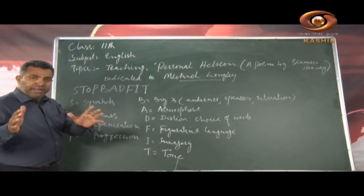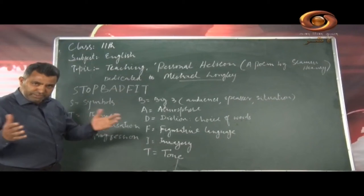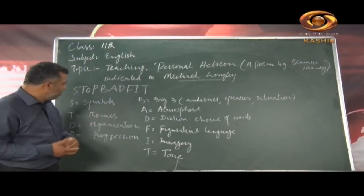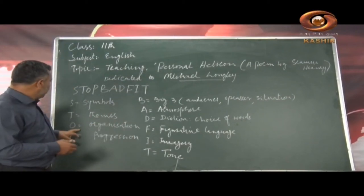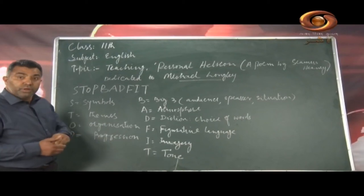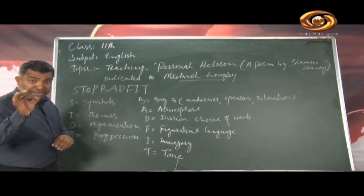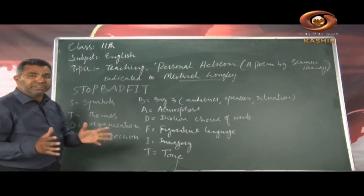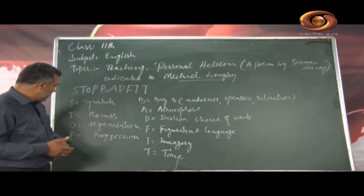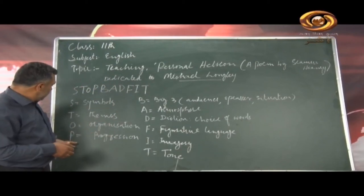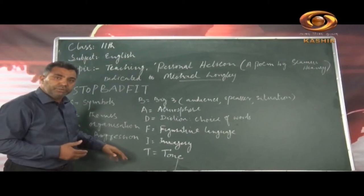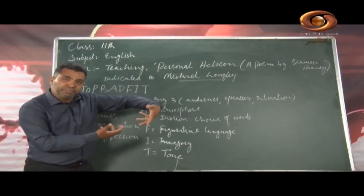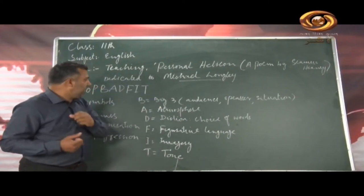The next one, O, stands for organization — from the beginning to the end, what is the organization of the poem, you need to understand that. Then D — development and progression — how the poem progresses from its beginning to the end.